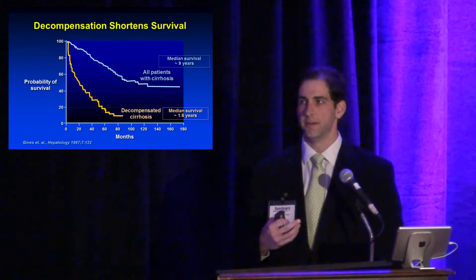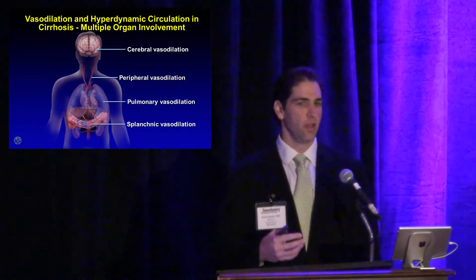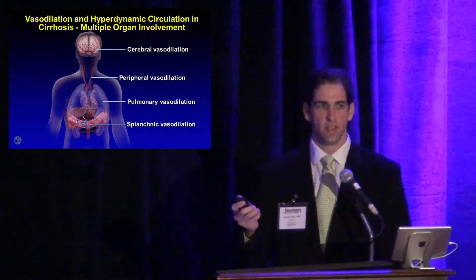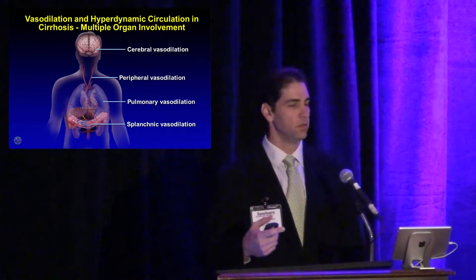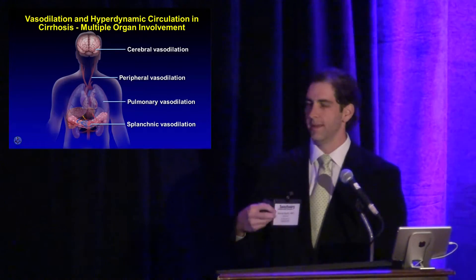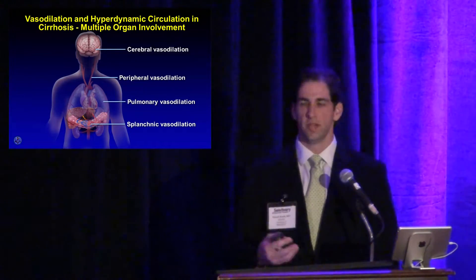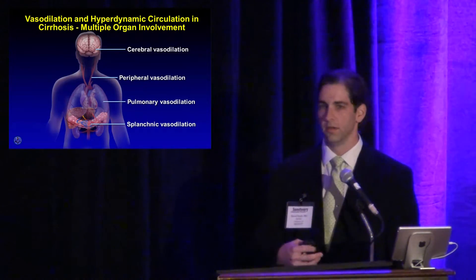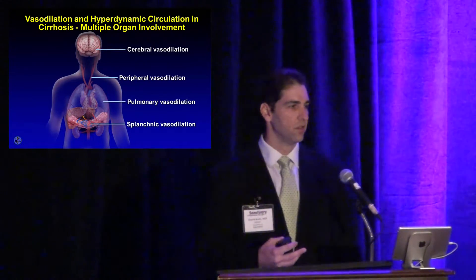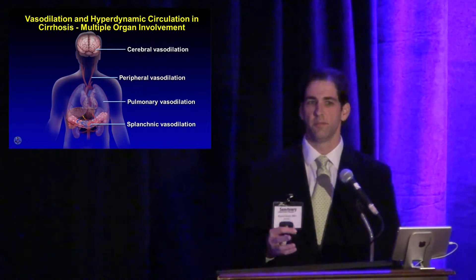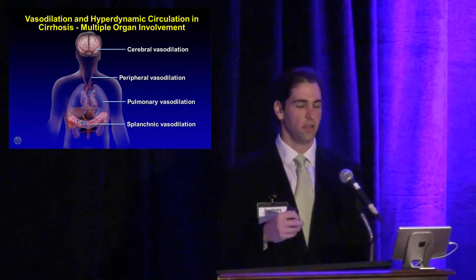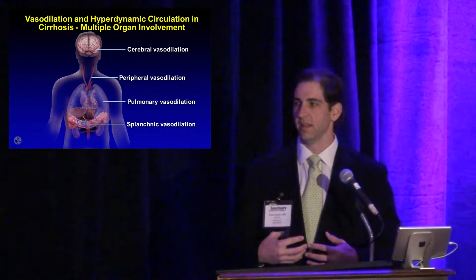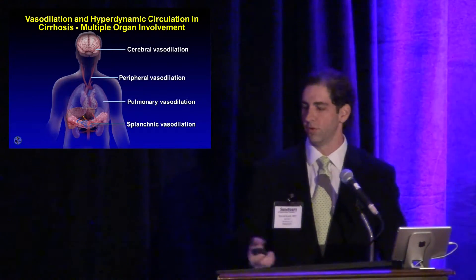Cirrhosis is a vascular disease, pertinent for this audience. Complications occur mainly due to derangements in the vascular system: cerebral vasodilation contributing to encephalopathy, peripheral vasodilation causing systemic hypotension that alters renal perfusion leading to sodium and water retention, dilation of pulmonary vasculature contributing to hepatopulmonary syndrome, and in about five percent of patients, vasoconstriction causing portopulmonary hypertension. Splanchnic vasodilation also contributes to portal hypertension.